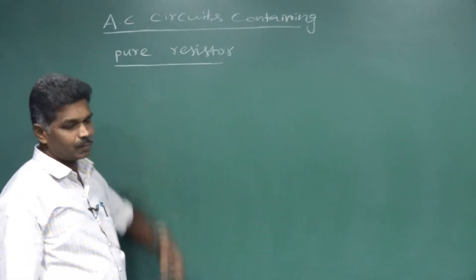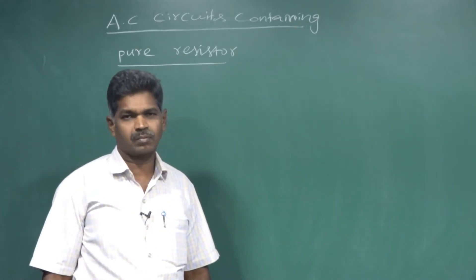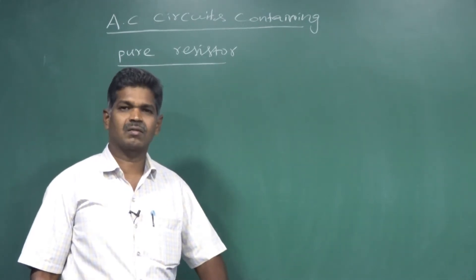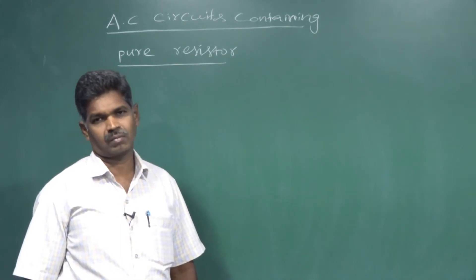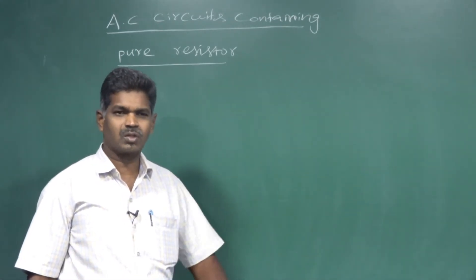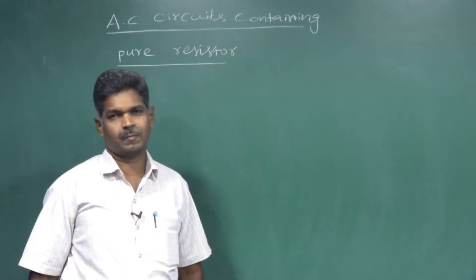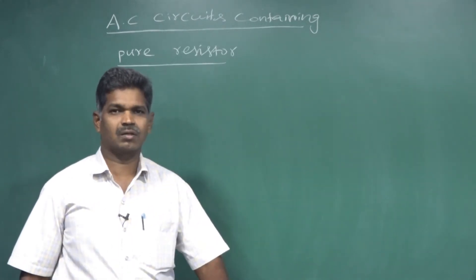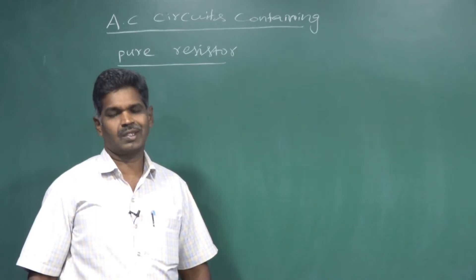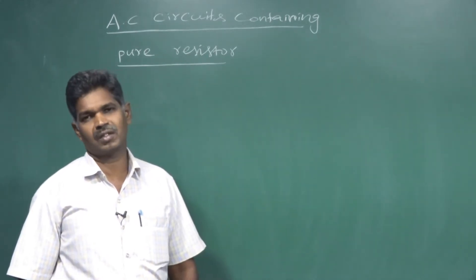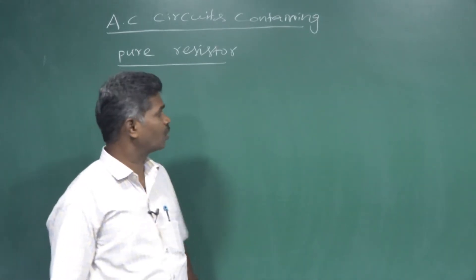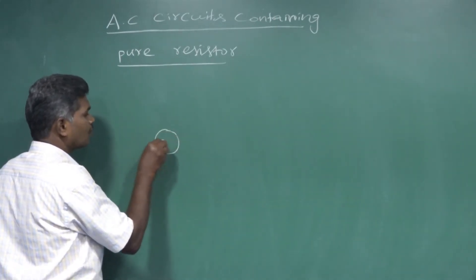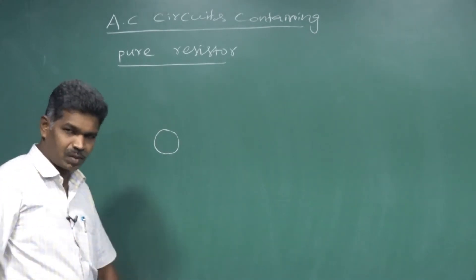We have an AC circuit symbol. An AC circuit is nothing but a circuit which can generate an alternating current. Alternating current means it has a sinusoidal waveform - that's why we are mentioning the sinusoidal symbol inside the circle.